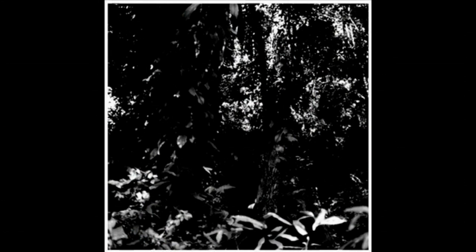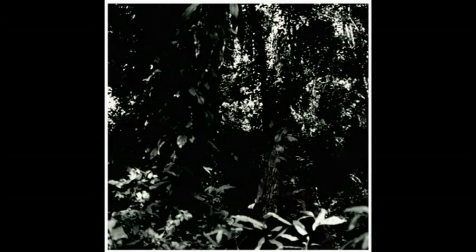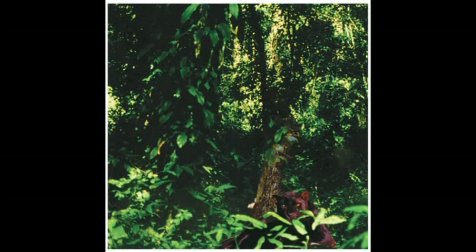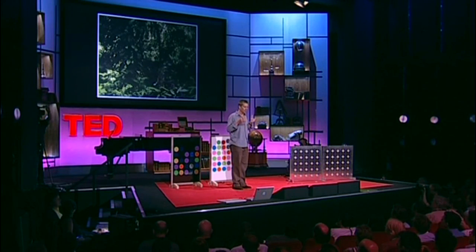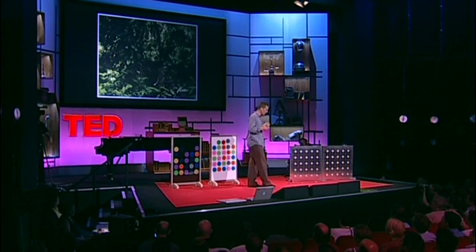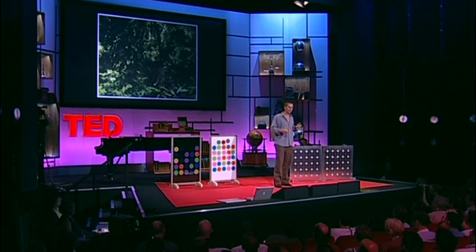What you see here is a jungle scene, and you see the surfaces according to the amount of light that those surfaces reflect. Can any of you see the predator that's about to jump out at you? And if you haven't seen it yet, you're dead. Now let's see the surfaces according to the quality of light that they reflect. And now you see it. So color enables us to see the similarities and differences between surfaces according to the full spectrum of light that they reflect.